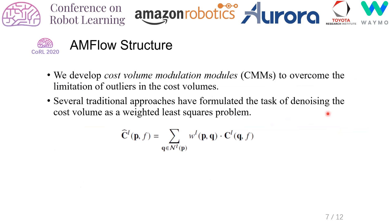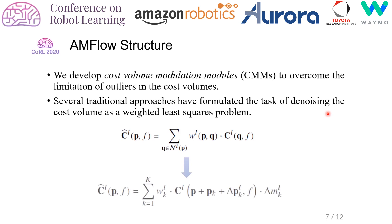The second limitation is that the commonly used cost volumes can contain many outliers due to the ambiguous correspondence in occluded areas. We developed cost-volume modulation modules, also known as CMMs, in our AMFlow to address this issue. Several traditional approaches have formulated this denoising task as a weighted least squares problem, and we realize it by a flexible and efficient sparse point-based scheme based on the four-neighbor ball convolution.